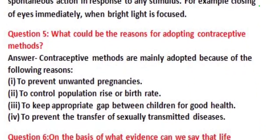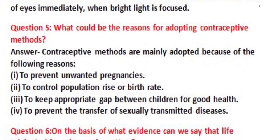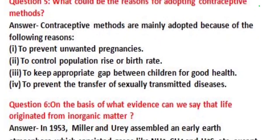Our next question is: what could be the reason for adopting contraceptive methods? Its answer is: contraceptive methods are mainly adopted for the following reasons — to prevent unwanted pregnancies, to control population rise or birth rate, to keep an appropriate gap between children for good health, and to prevent the transfer of sexually transmitted diseases.